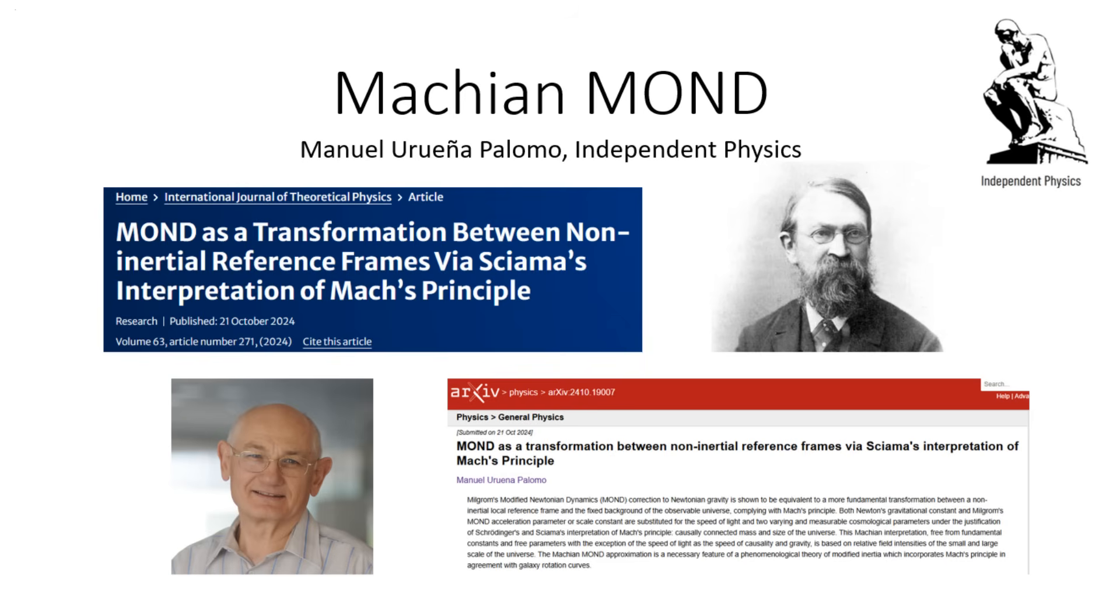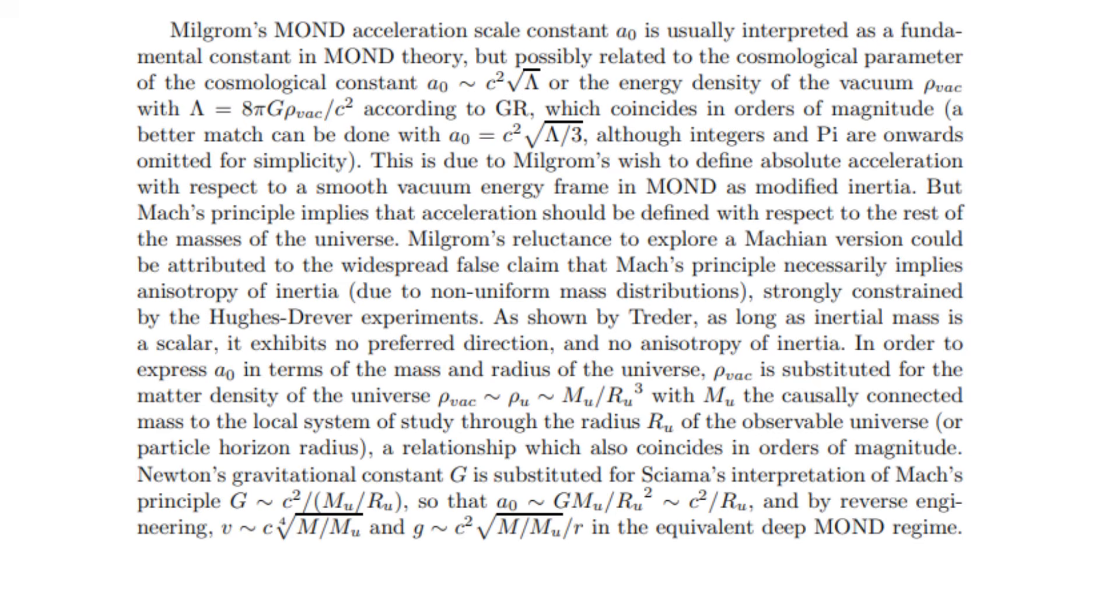In contrast, I have been supporting in this channel a different attempt to phenomenologically explain MOND. You can think about my version as the Machian approach, and McCulloch's as the quantum vacuum, Unruh radiation, and Rindler horizons approach. In my Machian MOND, I hypothesize that A0 is not constant or the speed of light squared divided by the size of the universe as in Quantized Inertia, but it is the gravitational field intensity of the observable universe.